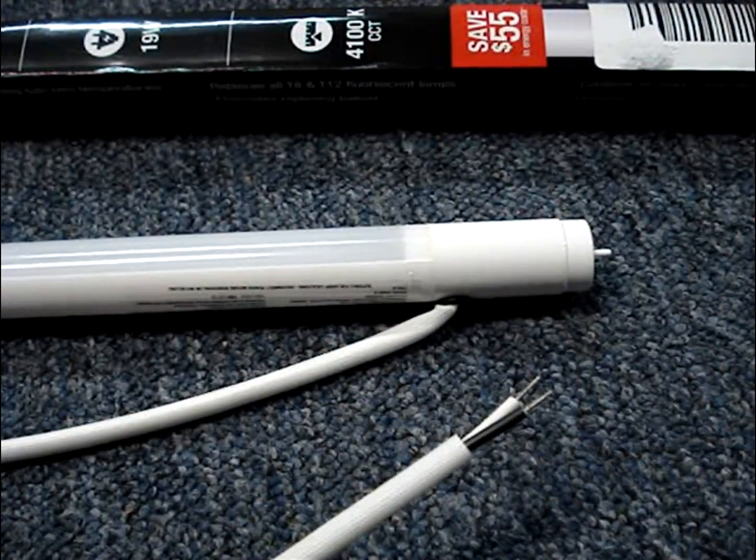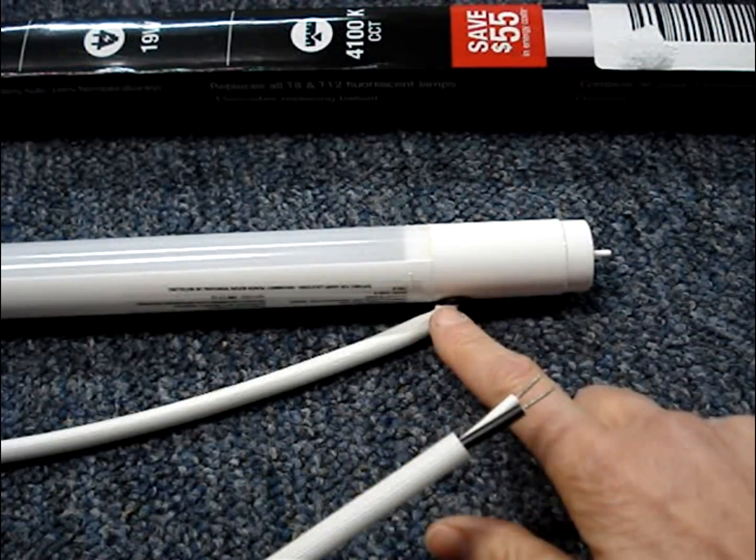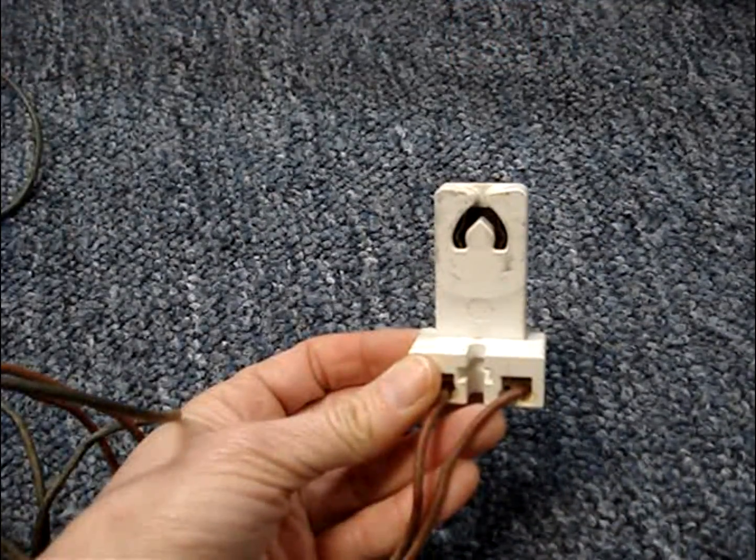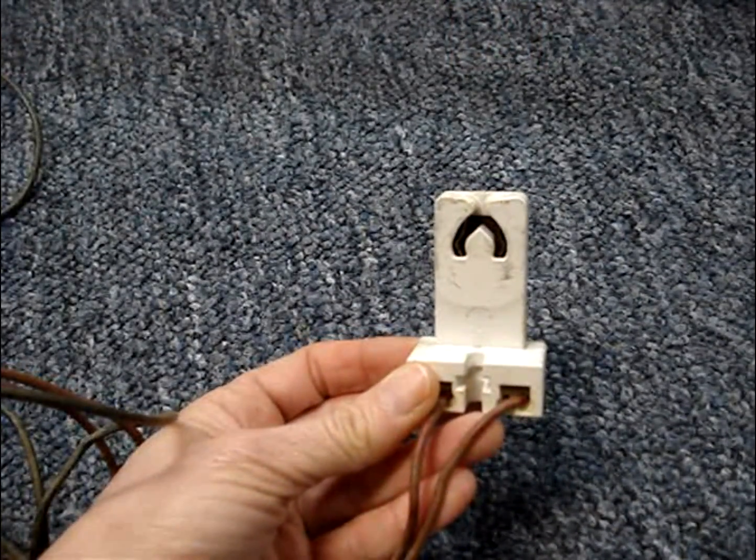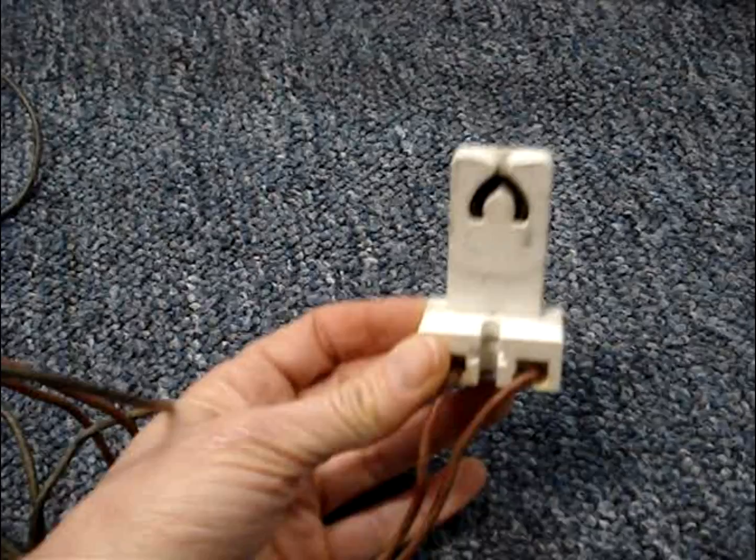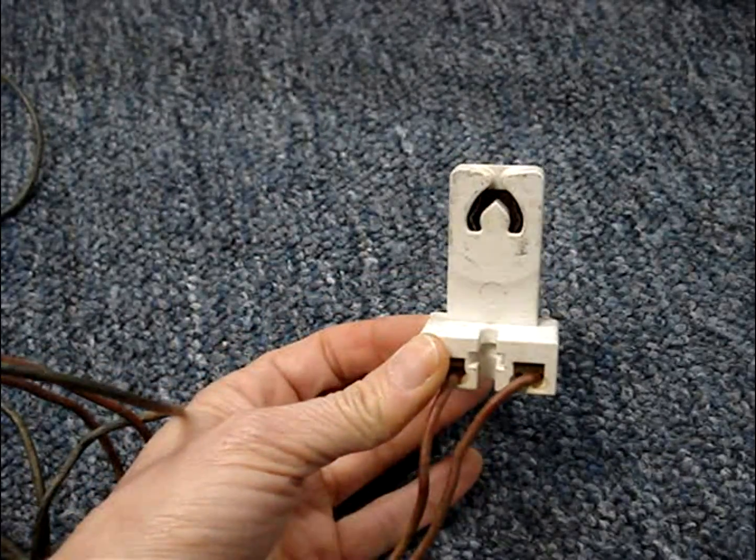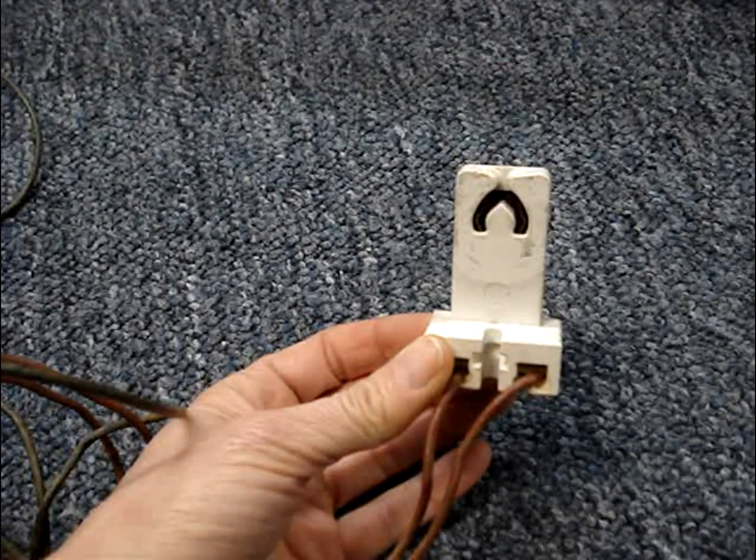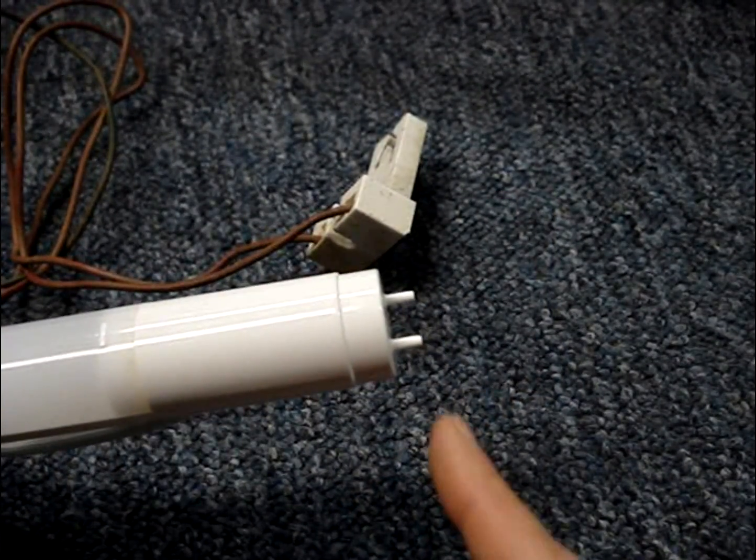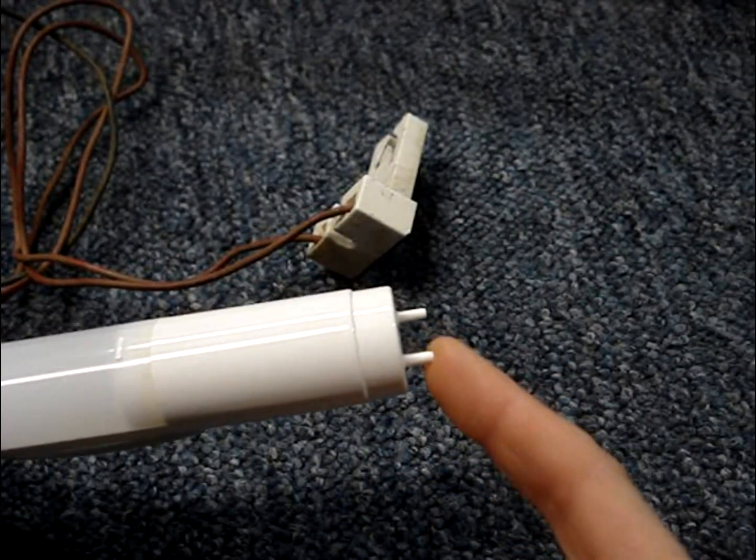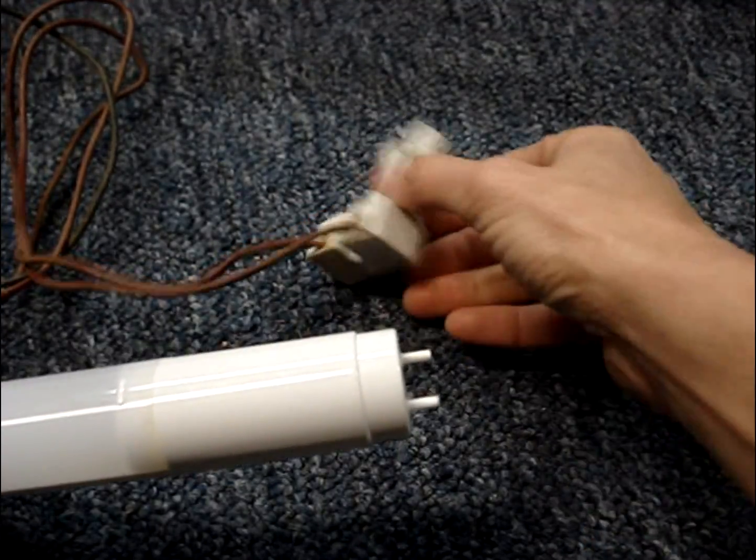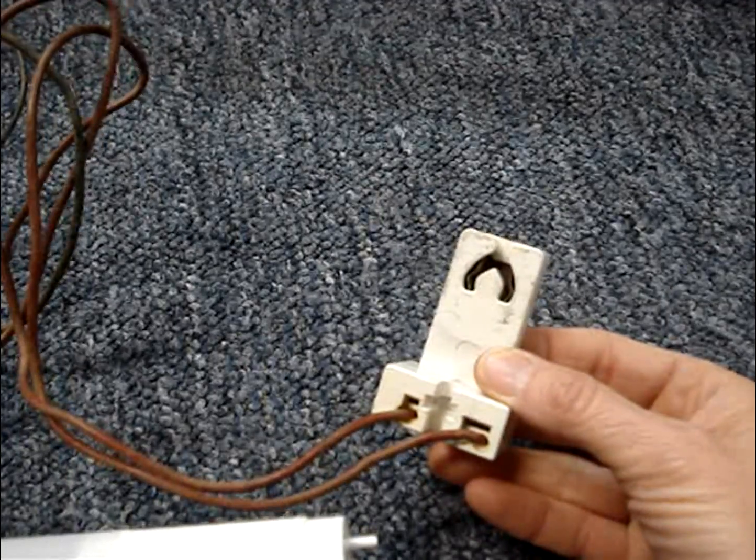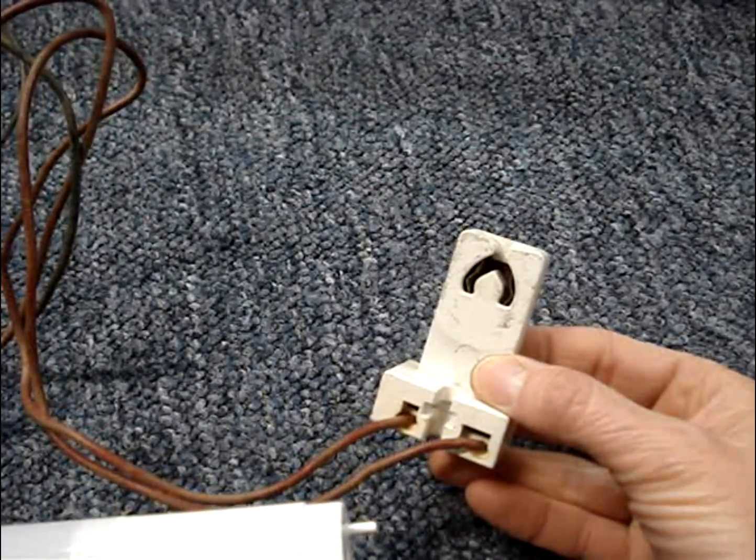You simply need to connect the hot and neutral that's connected directly to the bulb into your house circuit. You don't have to figure out your wiring configuration or rewire any tombstones or possibly replace the tombstones. The ends of the tubes are plastic and don't have any power connections. The tombstones simply become holders for the new LED tubes.